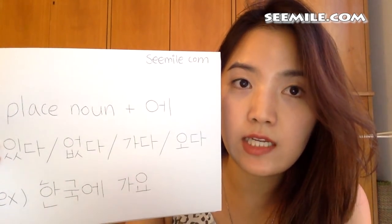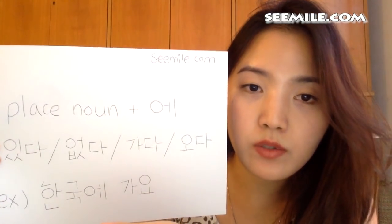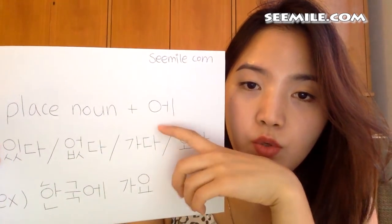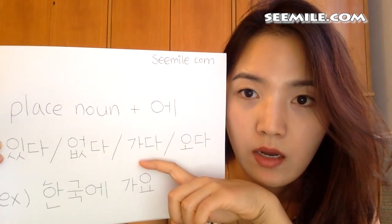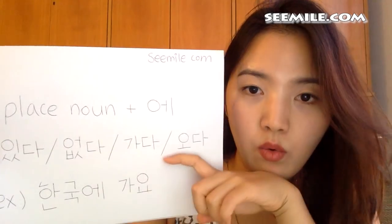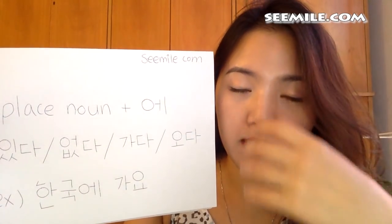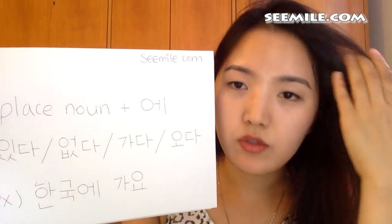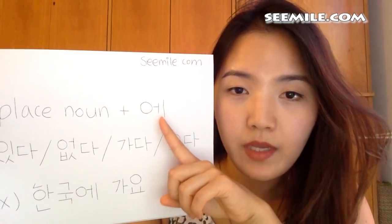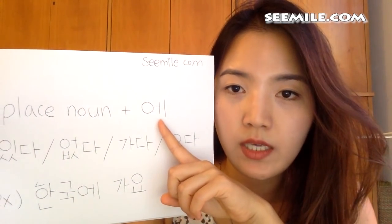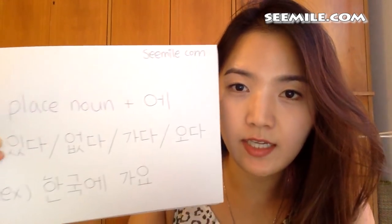Existence in or at the place. And also, 에 is used in sentences with 가다 or 오다, which means to go and to come. In this case, 에 is used to indicate the destination.